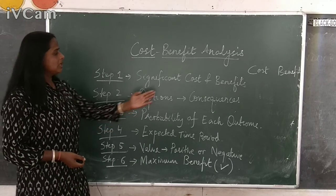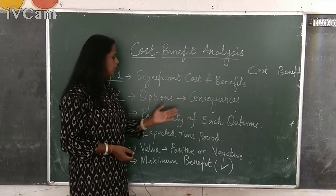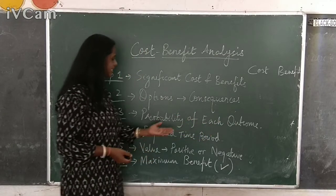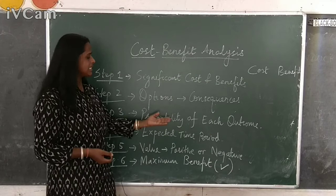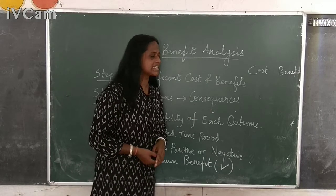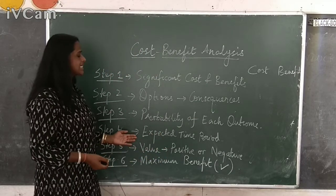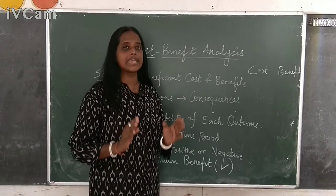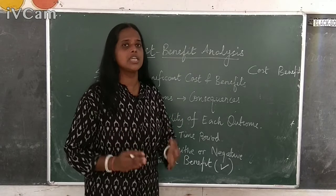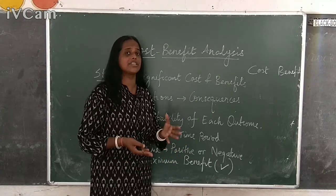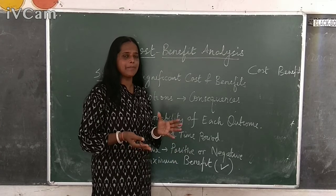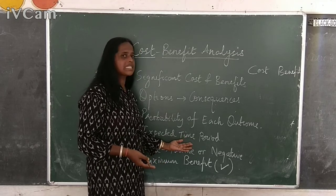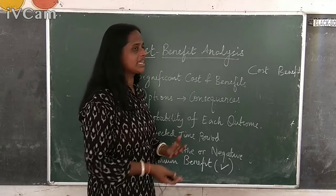In step three, what is the outcome of the consequence — the probability of each outcome — and in the next step you will write whether it is a positive outcome or a negative outcome. Then in step four, we try to write the expected time period. What time frame will be required to make the project a reality? That time period — it may be one year, it may be two years, it may be five years — that expected time period is also notified to the government.